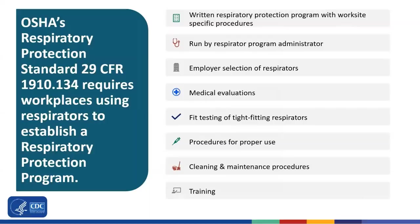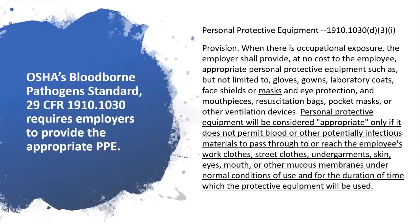OSHA has assigned protection levels for all classes of respirators. The bloodborne pathogen standard applies to all occupational exposure to blood or other potentially infectious materials. As with respiratory hazards, engineering and work practice controls must be used to eliminate or minimize employee exposures. Where occupational exposure remains after the institution of these controls, personal protective equipment, such as an elastomeric respirator, may be used.